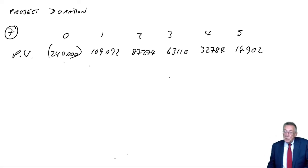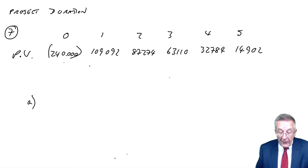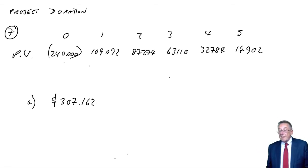And what is the total value of the project. So, add the present values. This is part A of what we're doing on Macaulay duration. 109,092 plus 87,274, 63,110, 32,784, 14,902. The total present value: 307,162. So discount the flows at the cost of capital, add together the present values. And we say, there's the value of this project. We pay 240 to get something with a value of 307. There is the value of the project.